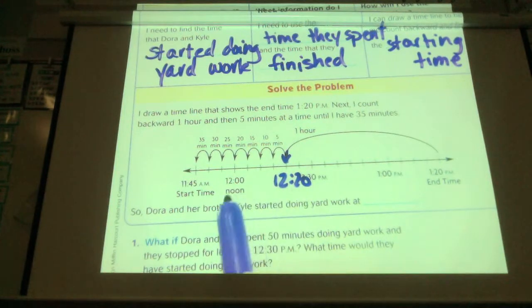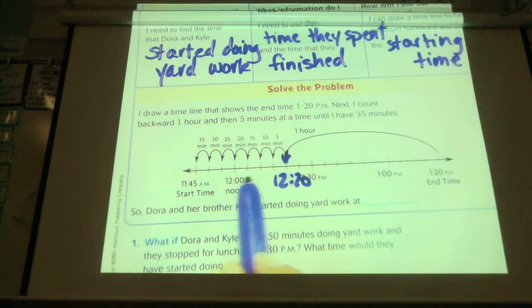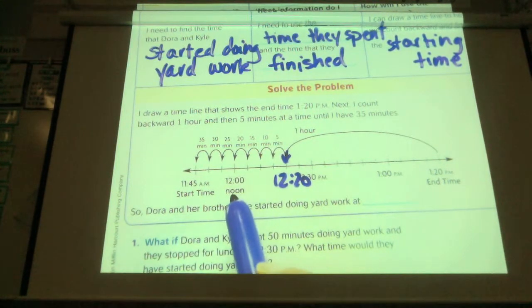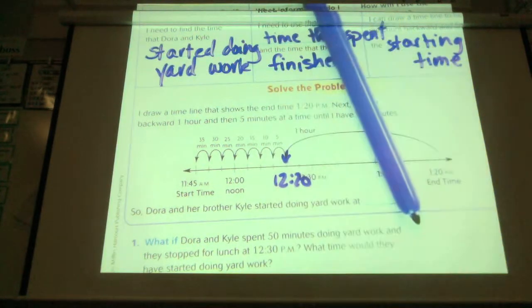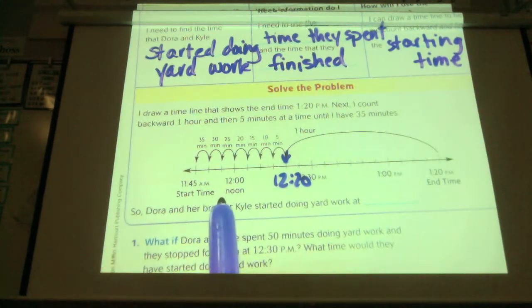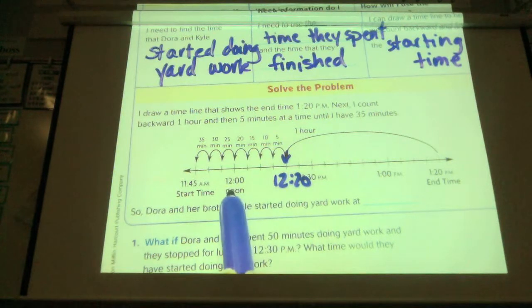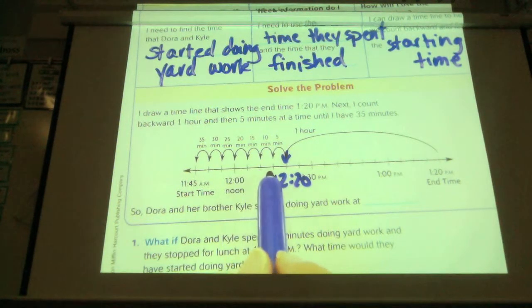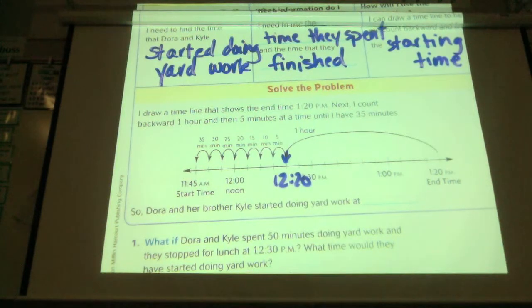And my number line is done by increments of 5. How do I know that? Okay, I know because if I go 12 to 12:30, I can guess. Okay, maybe they're counting by 5s. 5, 10, 15, 20, 25, 30. Yeah, that works.